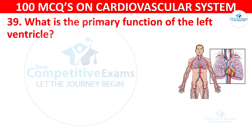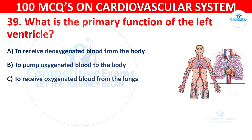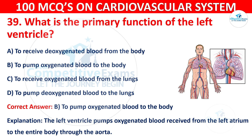Question 39: What is the primary function of the left ventricle? Options are: To receive deoxygenated blood from the body, To pump oxygenated blood to the body, To receive oxygenated blood from the lungs, or To pump deoxygenated blood to the lungs. The correct answer is B, to pump oxygenated blood to the body. The left ventricle pumps oxygenated blood received from the left atrium to the entire body through the aorta.